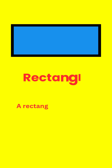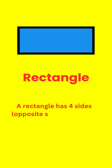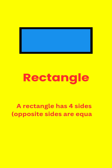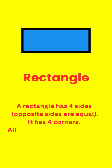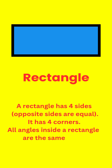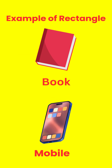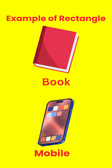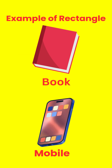Rectangle. A rectangle has four sides. Opposite sides are equal, and it has four corners. All angles inside a rectangle are the same, 90 degrees. Examples of rectangle in our daily life are book and mobile phone.